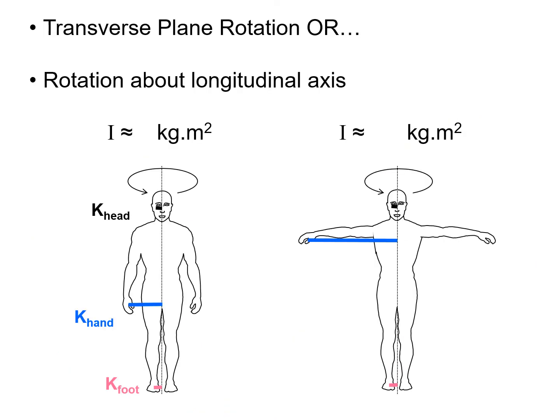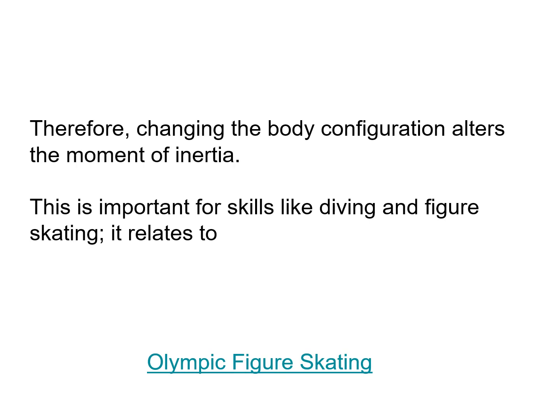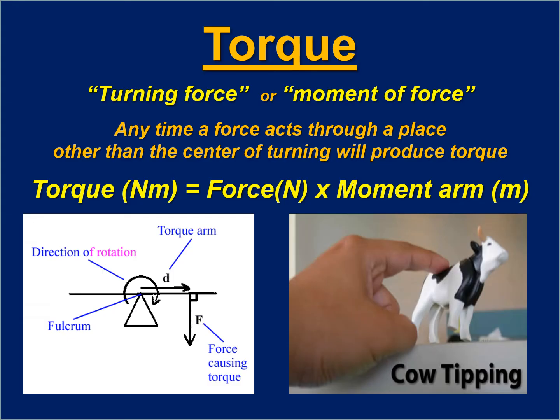When looking at the transverse plane — rotation about our longitudinal axis, like spinning in an office chair or an ice skater doing a triple axel — in a normal position we might have a moment of inertia of about 1 kg·m². If we abduct our arms outward, we increase that moment of inertia in the transverse plane. To decrease it, we adduct our arms closer together, which decreases that moment of inertia and increases angular velocity. Changing body configuration alters the moment of inertia — this is important for skills like diving and figure skating.